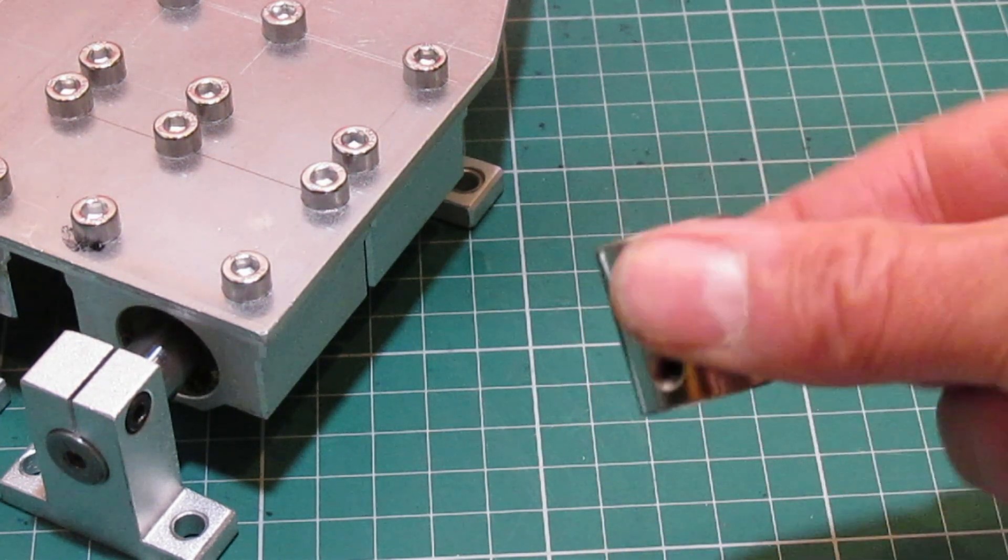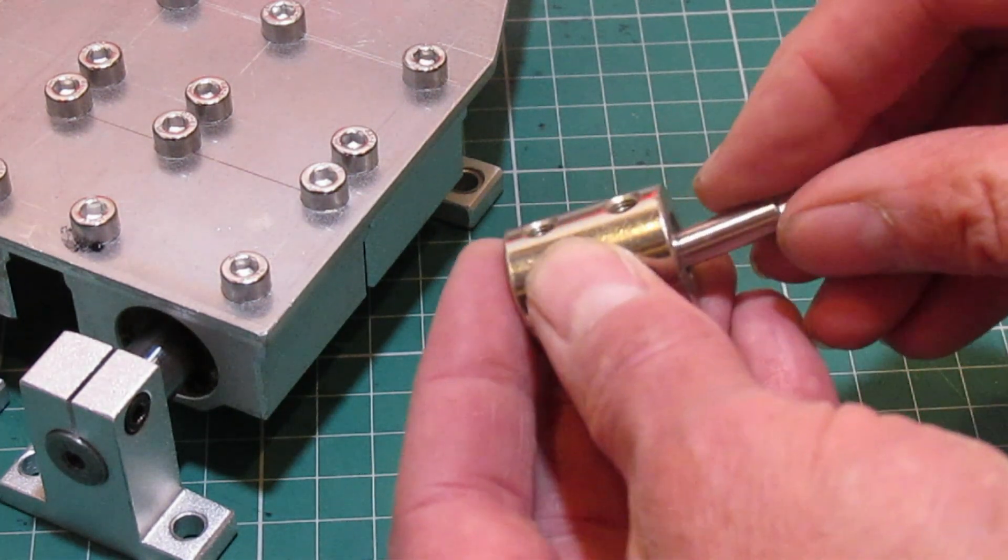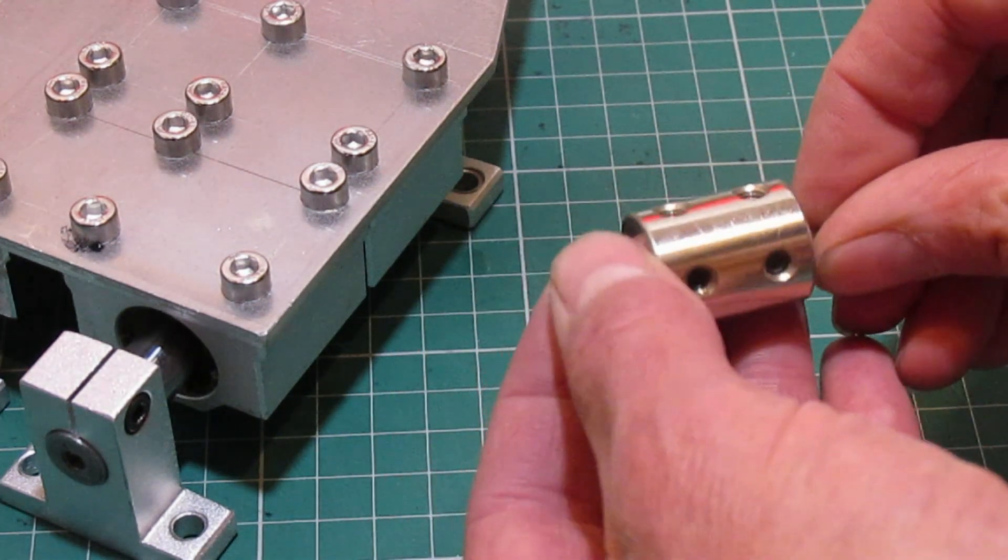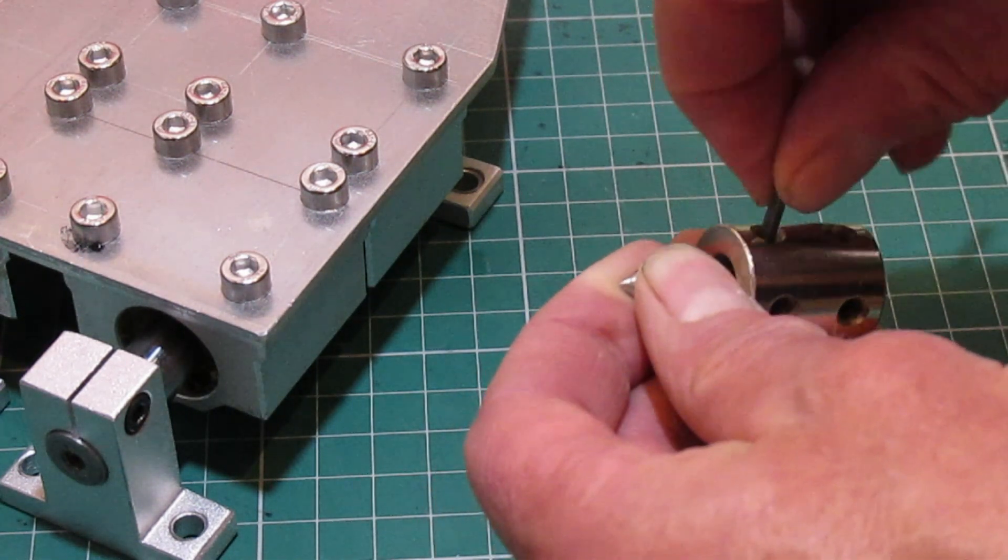A steel coupling with the outside diameter of 20mm, which the homemade bit can be tightened into.